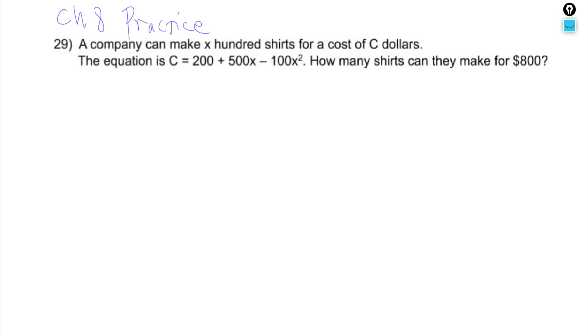A company can make X hundred shirts for a cost of C dollars. The equation is C equals 200 plus 500X minus 100X squared. How many shirts can they make for $800?